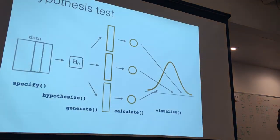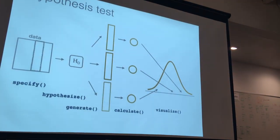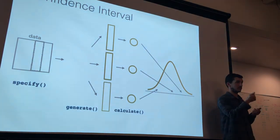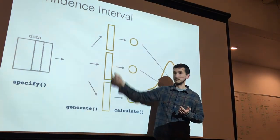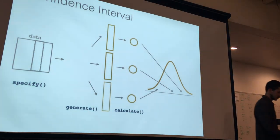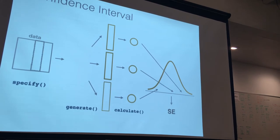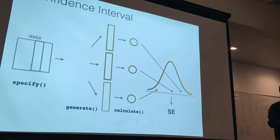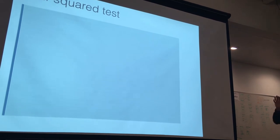If instead you want a confidence interval using bootstrapping, you do all the same steps except you generate bootstrap datasets from your original data rather than under a null hypothesis. For a bootstrap interval on the difference in proportions, you generate bootstrap datasets, compute the difference in proportions for each, and look at the bootstrap distribution to get a good estimate of the uncertainty in your point estimate. Check out the infer package documentation for more on bootstrapping.